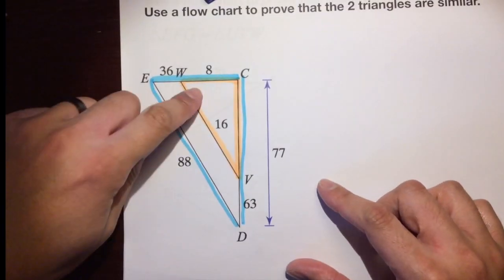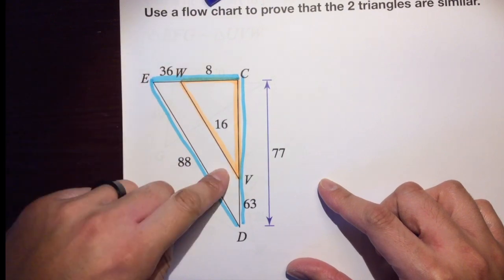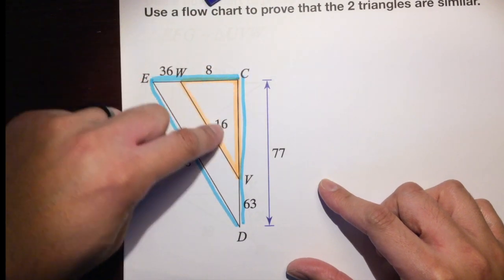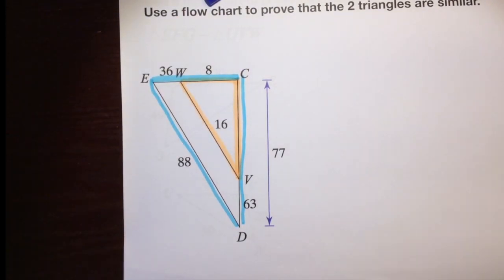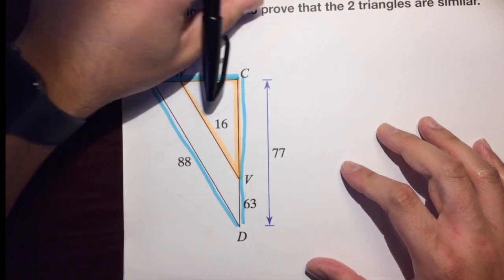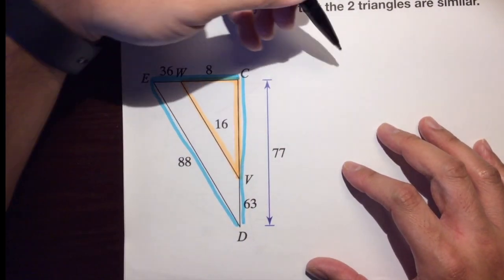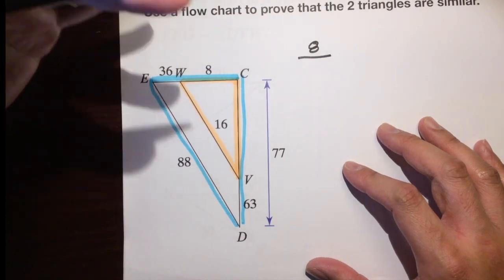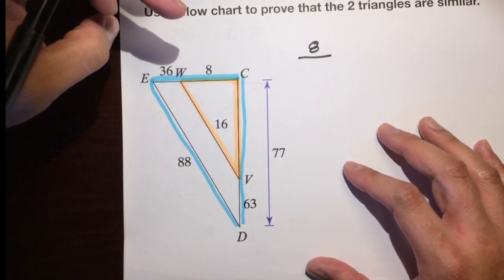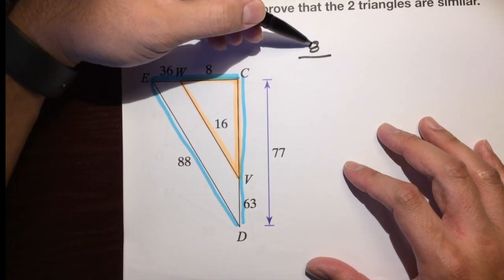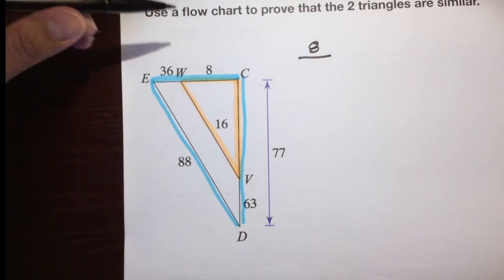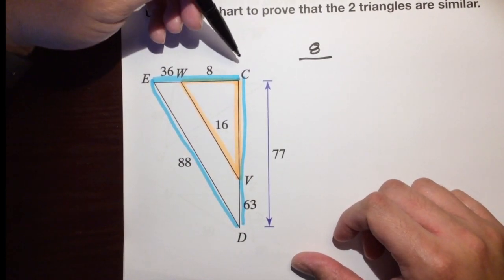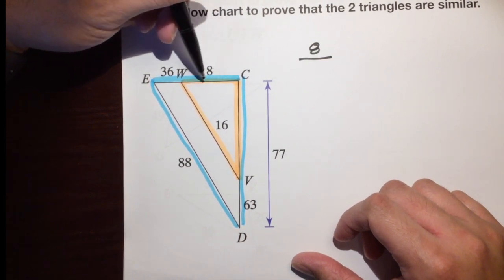This right here looks like a trapezoid — don't use that. Use this big blue triangle. You want to prove that this big blue triangle is similar to this orange triangle. Let's go from small triangle to big triangle. The first ratio: 8 over — and remember, you want to be consistent. I'm going to start with the small triangle sides in the numerator. So, 8 over the full side of the big triangle.